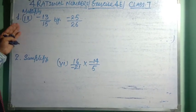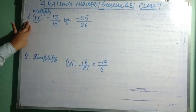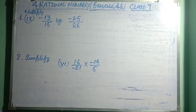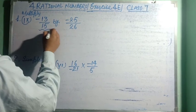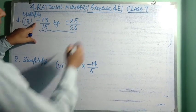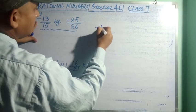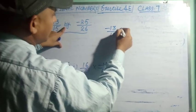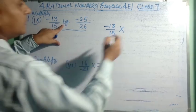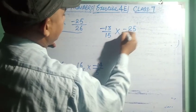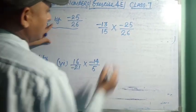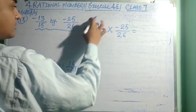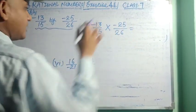Now be ready to solve problems from Exercise 4A. I have taken Question 1, Sub-question 9. The question says multiply. Here the solution: minus 3/13 multiplied by minus 25/26. The 'by' here means multiply, so we multiply this rational number by this rational number.